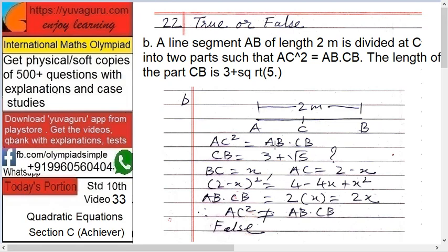Let's say BC equals x. Therefore AC equals 2 minus x. Now check the condition: (2 minus x)². AC² equals AB into CB. So AB into CB is... okay, let's solve this. (2 minus x)² equals 4 minus 4x plus x². This is the left-hand side. Now the right-hand side.